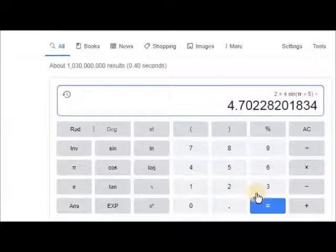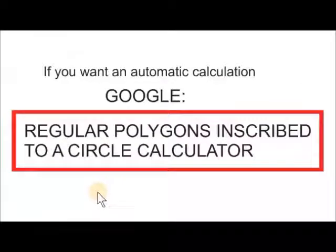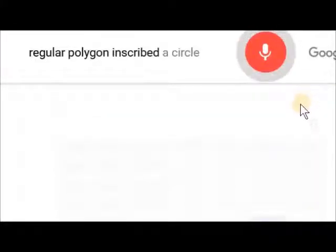If you want an automatic calculation, Google 'regular polygons inscribed to a circle calculator.' Regular polygon inscribed to a circle calculator.